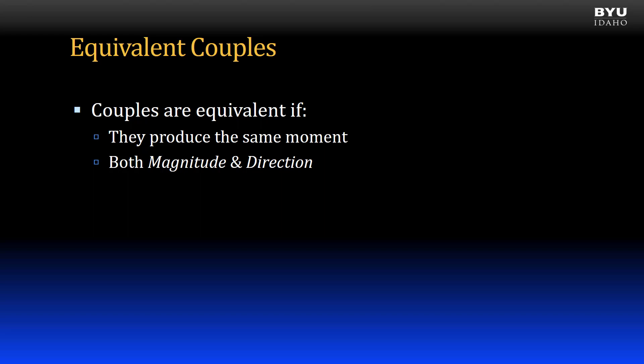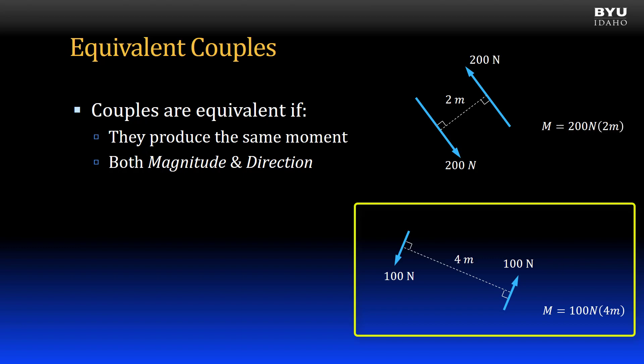For example, this couple produces a moment of 200 newtons times two meters or 400 newton meters in the positive direction. This couple is an equivalent couple. Even though the magnitude of the forces are different, the distance between the forces compensates to get the same magnitude and direction, 400 newton meters in the positive direction.